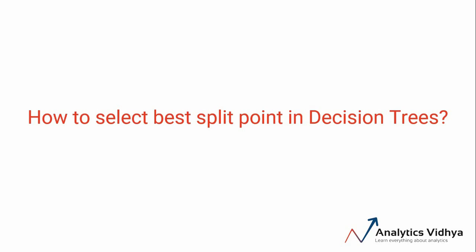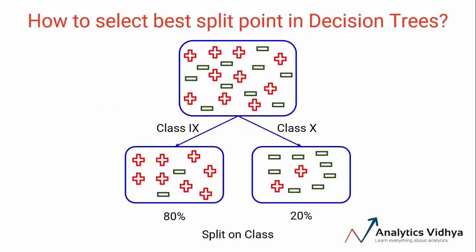Welcome back to the decision tree module. In the previous videos we've seen that the attribute 'class' is able to estimate the student's behavior about playing cricket or not, and this attribute is doing a much better job compared to the remaining two variables like height and performance in class. If you recall, we made the split on all the available features and then compared each split to decide which one was the best.